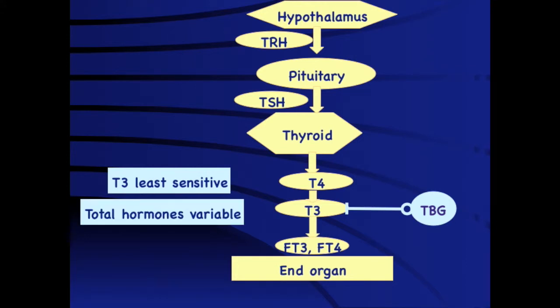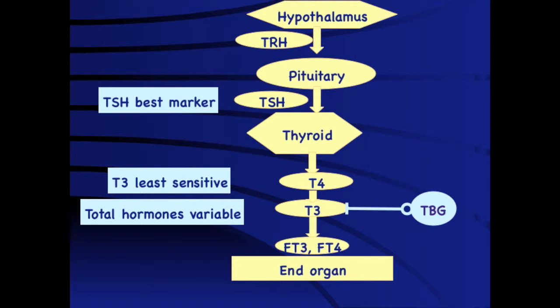Total hormones may be variable, so in clinical situations where TBG levels are affected, we should measure free hormones rather than total hormones. The first change to occur in a primary hypothyroid state is an increase in TSH levels, followed by a fall in T4, and finally a fall in T3. TSH is the best marker for primary hypothyroidism, but it will have no role to play in a child who has central hypothyroidism.